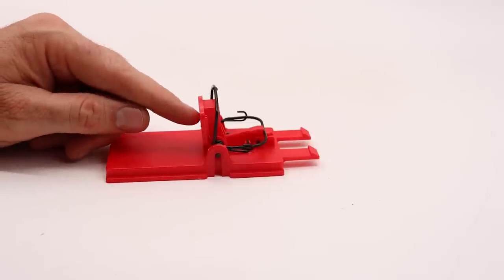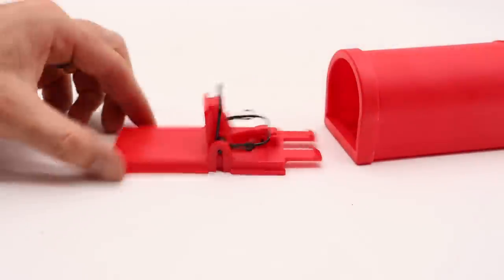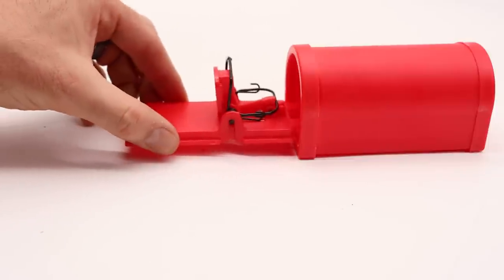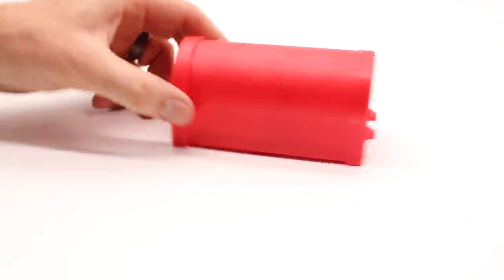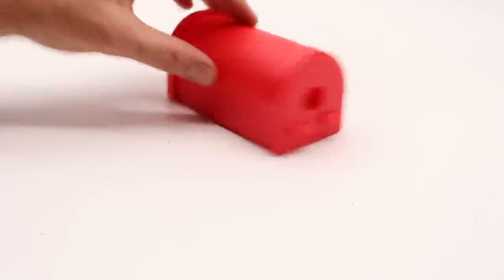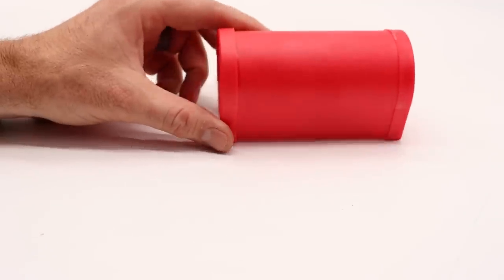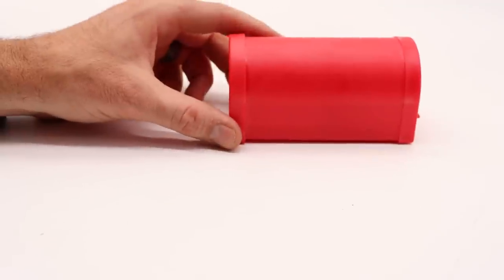Then once the trap's all set with peanut butter on the trigger, you slide the trap back inside this tube. There's a slot there, and it locks into place with those two clips. This is all ready to go, and we're going to set it up to see if we can catch a mouse in the barn.